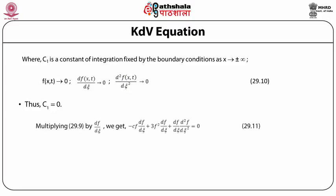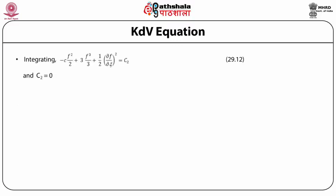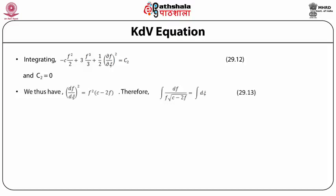Multiplying equation (29.9) by df/dξ and integrating, we get: −cf²/2 + f³ + (1/2)(df/dξ)² = C₂, and C₂ = 0 by the same boundary conditions. We thus have: (df/dξ)² = f²(c − 2f).